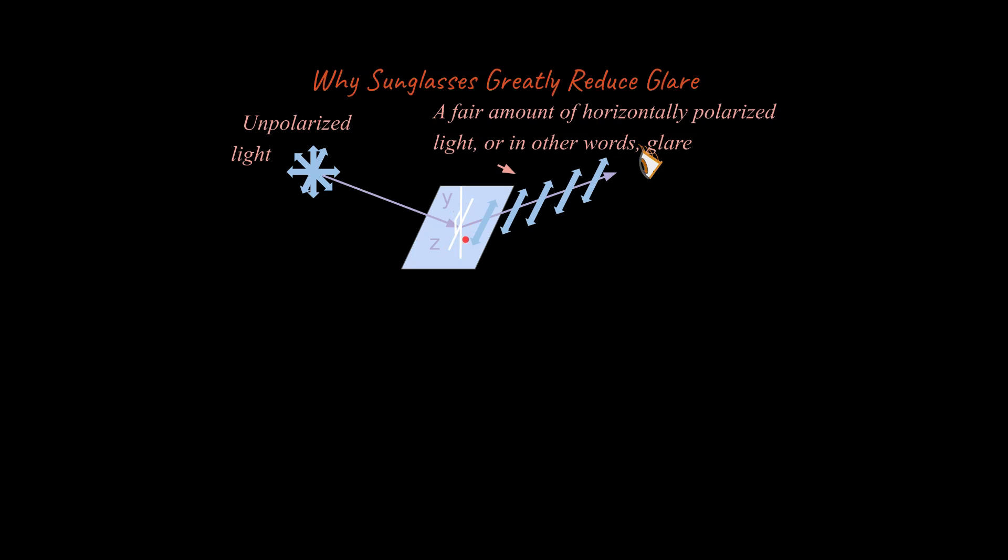You have a fair amount of light that's going to be horizontally polarized in reference to this horizontal surface. So when it hits the observer's eye, there's a fair amount that's going to be horizontally polarized. That's actually a little hard for our eyes to interpret.